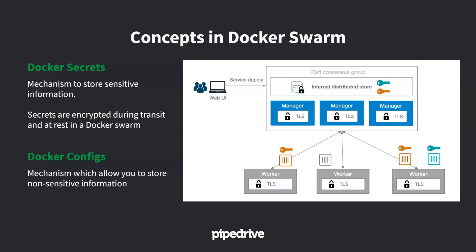Then we have secrets and configuration — the mechanism Swarm provides to store sensitive data. That data is stored inside the managers and transmitted to the service when you assign that secret to it. All transmission is encrypted by TLS. Config is the same thing as secrets, but in plain text — you can see the config inside Swarm, whereas secrets are already encrypted and you don't know what they contain.